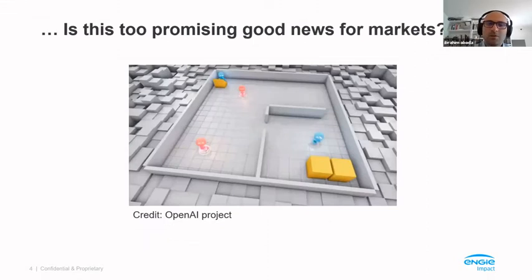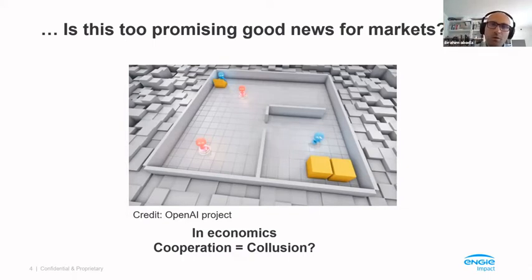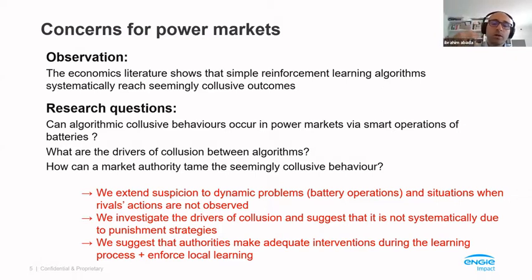Going back to markets and economics, this is not good news, because in markets — in power markets in particular — cooperation is equivalent to collusion. This is bad for two reasons: first, it is simply forbidden for human beings; second, it destroys welfare. This drives me to the main research questions. There is a growing body of literature testing the emergence of these algorithms in stylized markets, and they witness the emergence of collusive behaviors — algorithms learn to exert market power at quasi-cartel levels, which is bad news.